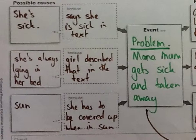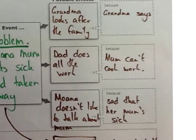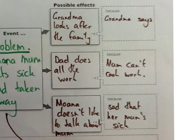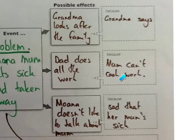When we explain something, not only do we have to explain the cause, but we also have to talk about the possible effects of the problem. Here are the effects. The first one: Grandma looks after the family — we identified that because it's what Grandma says in the text. Dad does all the work, as Mum can't do the work. These are good answers because we've identified an effect and said why it's an effect. Same with the causes — we've got to say why it's a cause.